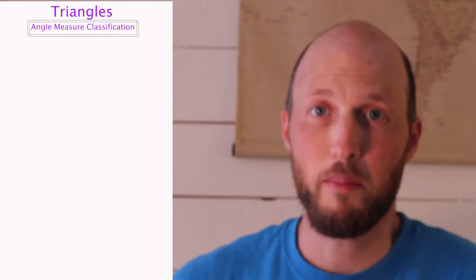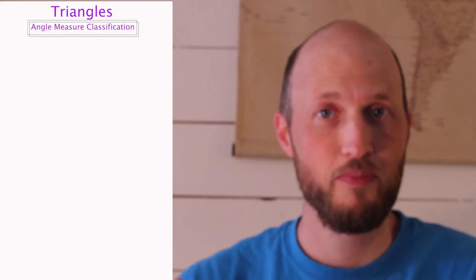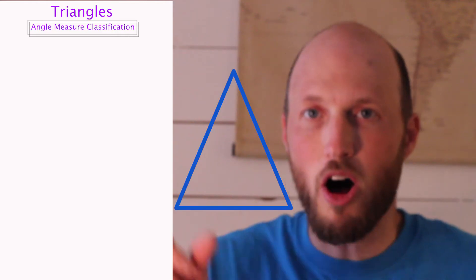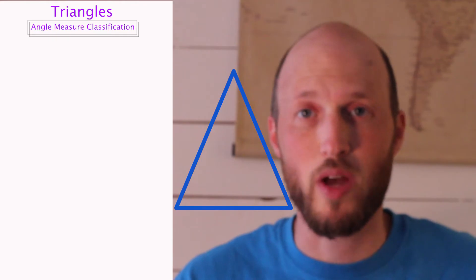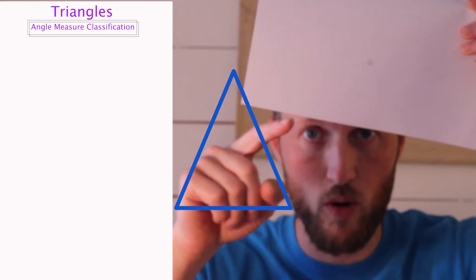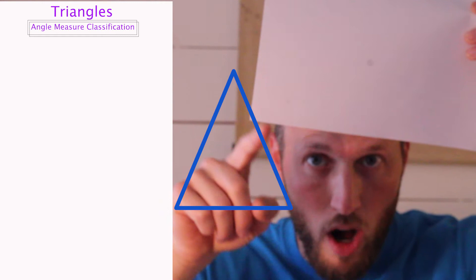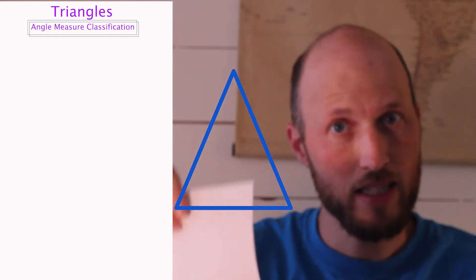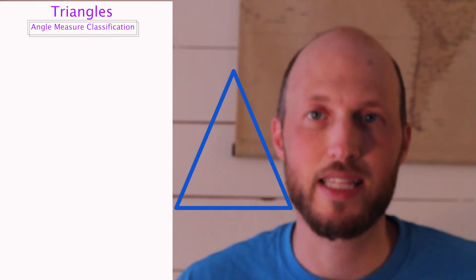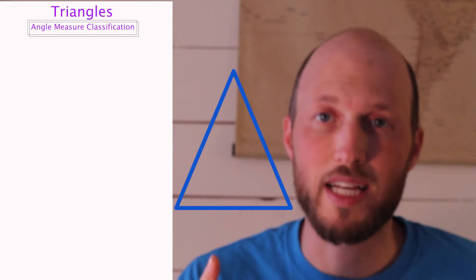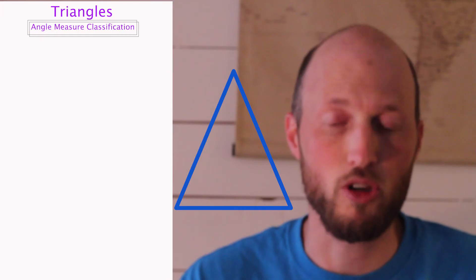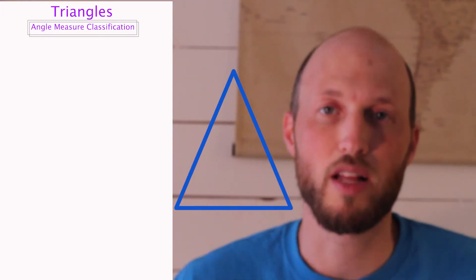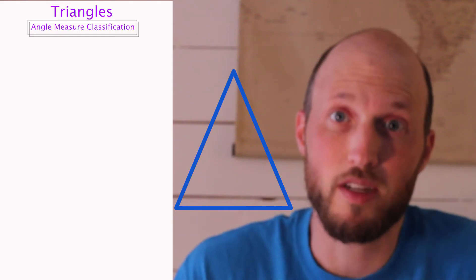The first triangle we're gonna talk about is the acute triangle. All the angles are less than 90 degrees. See the corner of your paper? It is always going to be 90 degrees, so you can put it into all the corners and see if it is less than 90 degrees. All the corners in this triangle are less than 90 degrees, so that makes it an acute triangle.